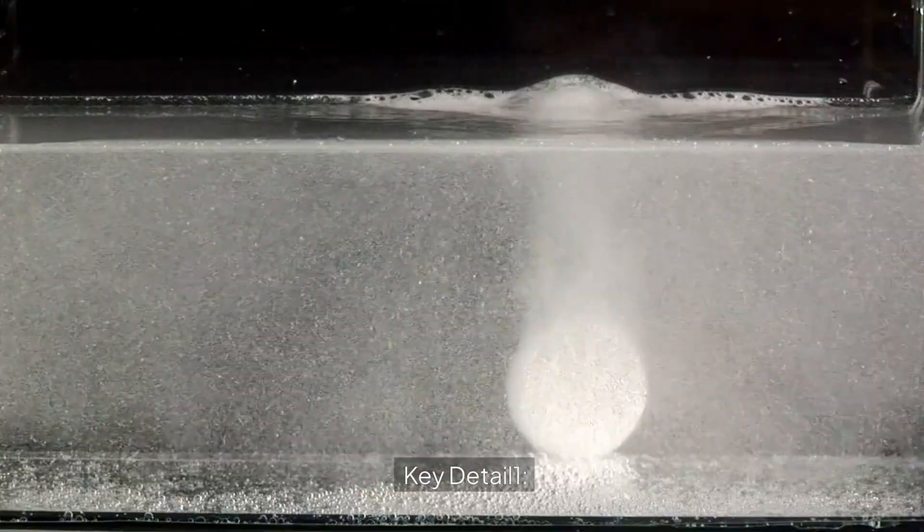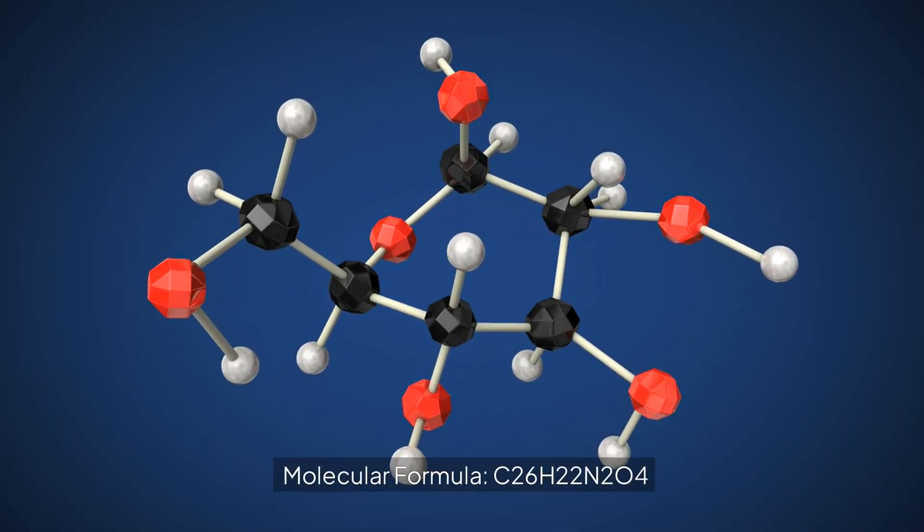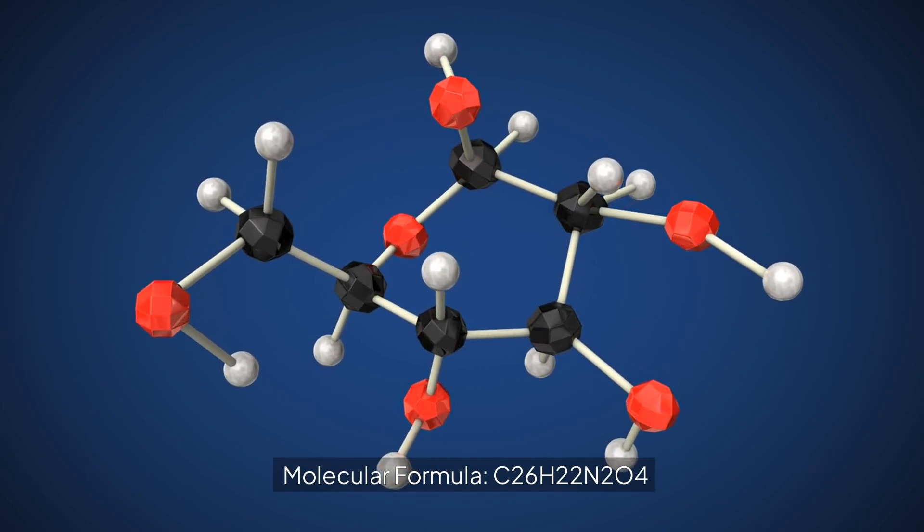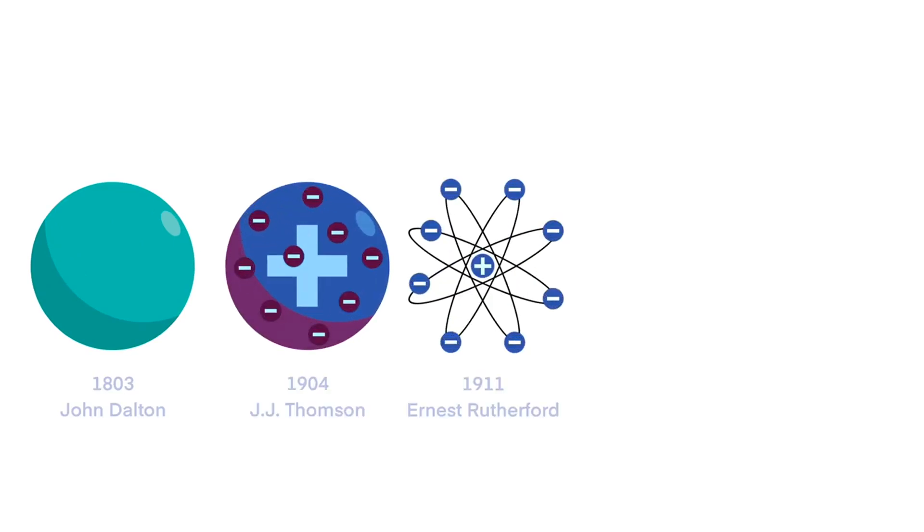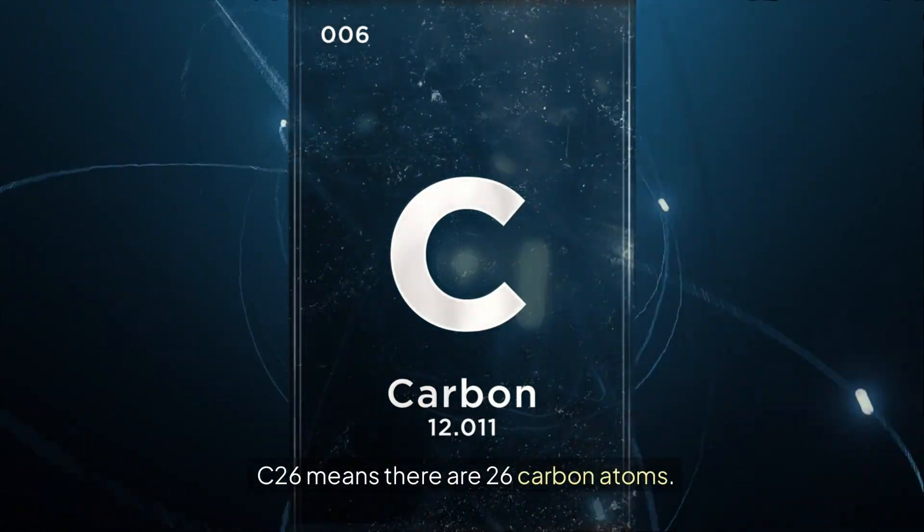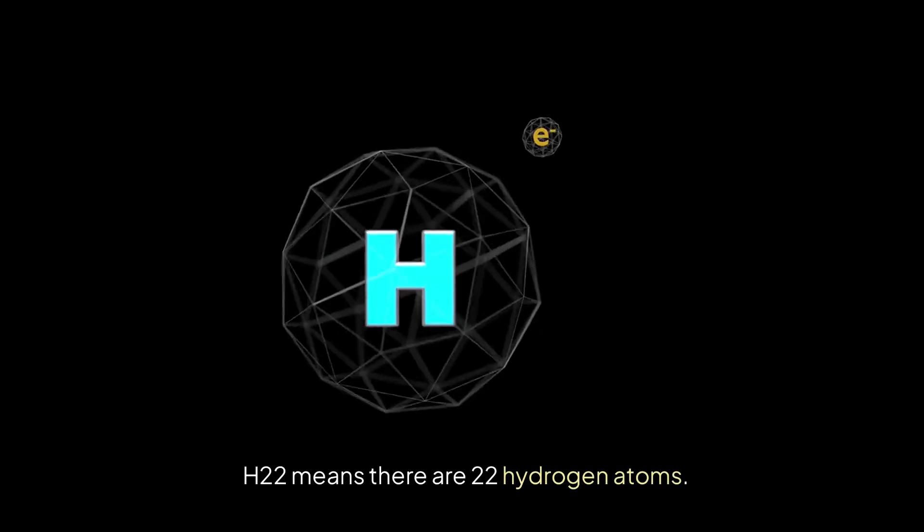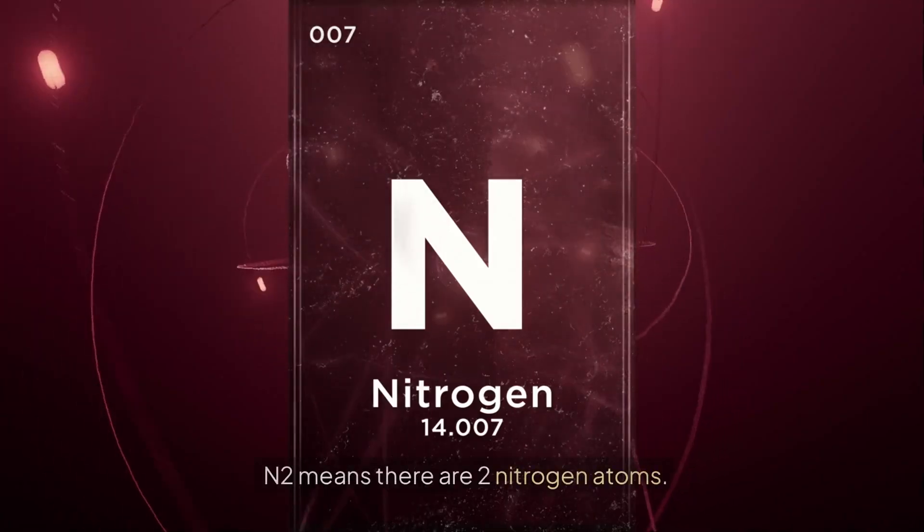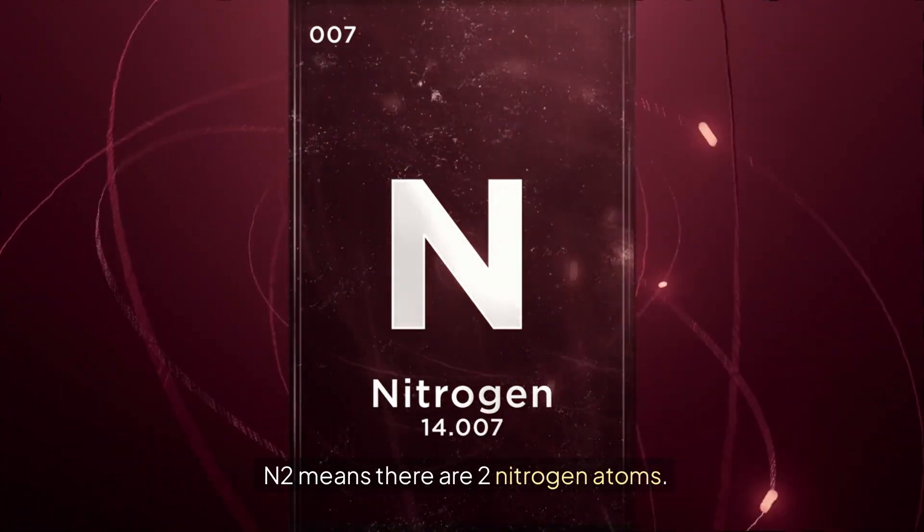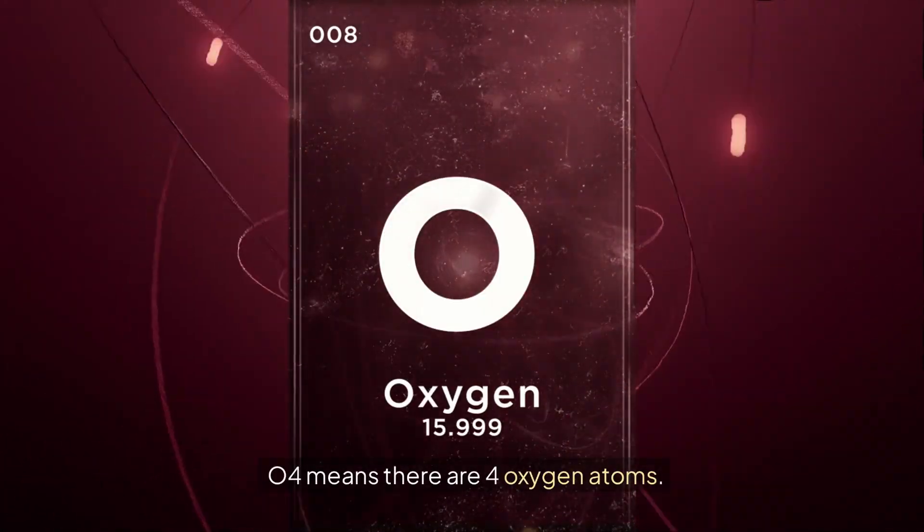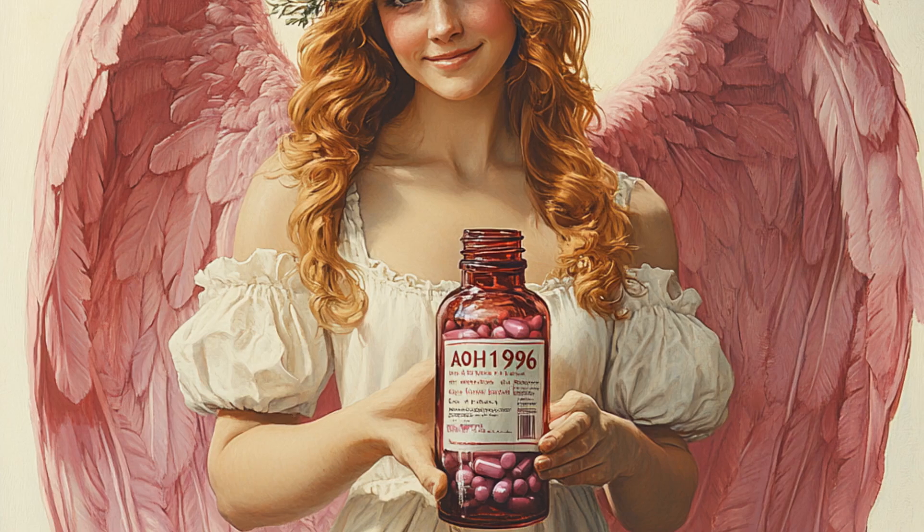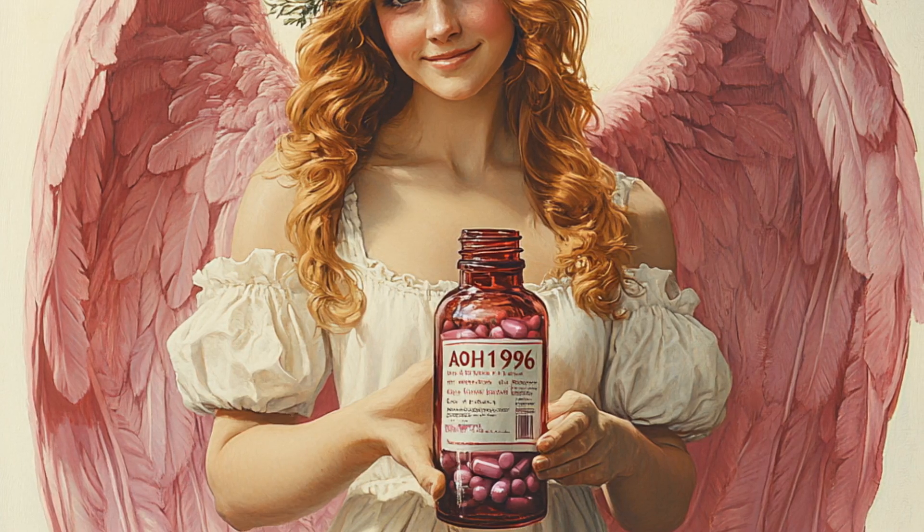Key detail one: Molecular formula C26H22N2O4. What is molecular formula? This formula represents the types and numbers of atoms in a molecule of AOH1996. C26 means there are 26 carbon atoms, H22 means there are 22 hydrogen atoms, N2 means there are two nitrogen atoms, O4 means there are four oxygen atoms.